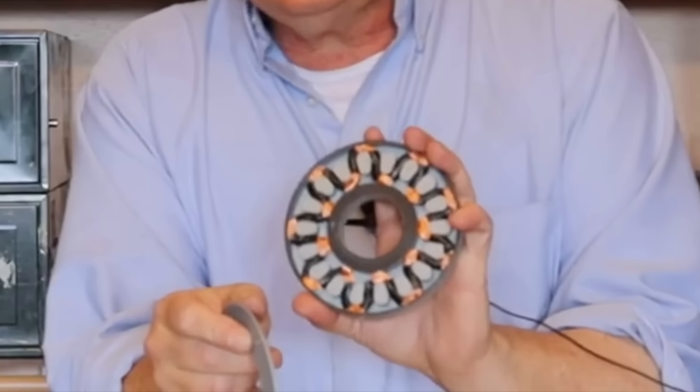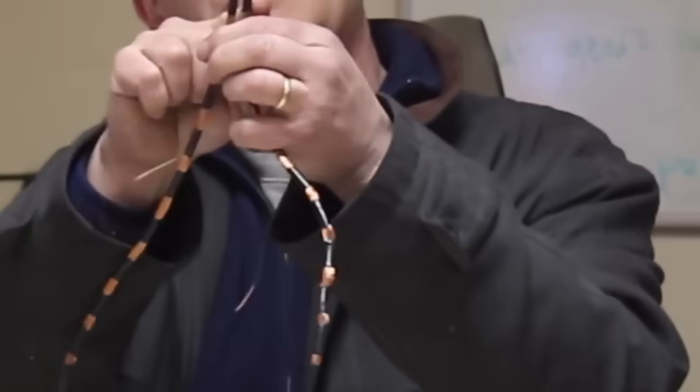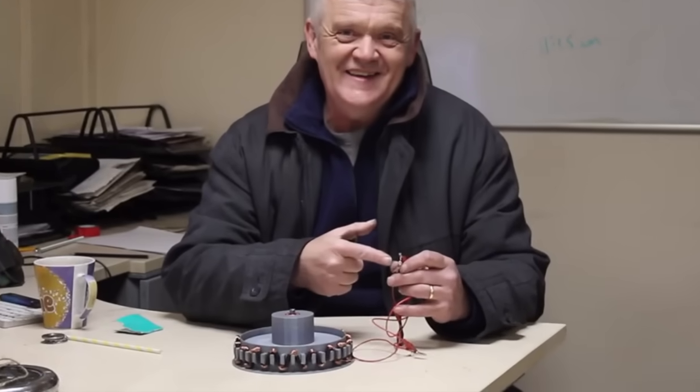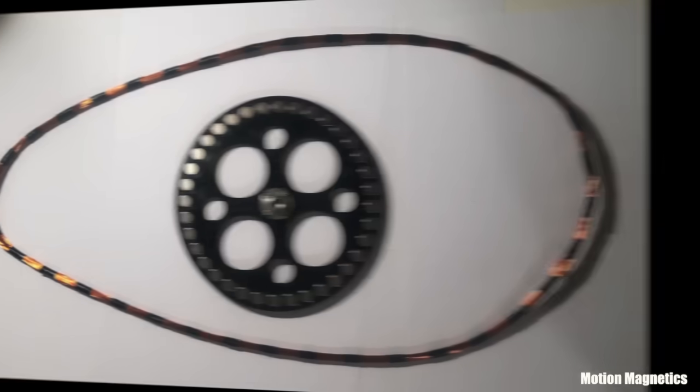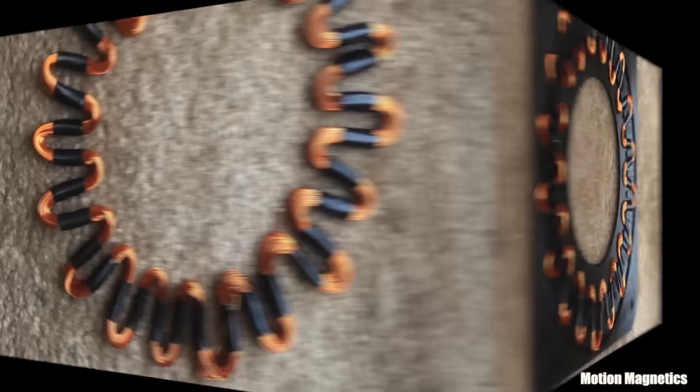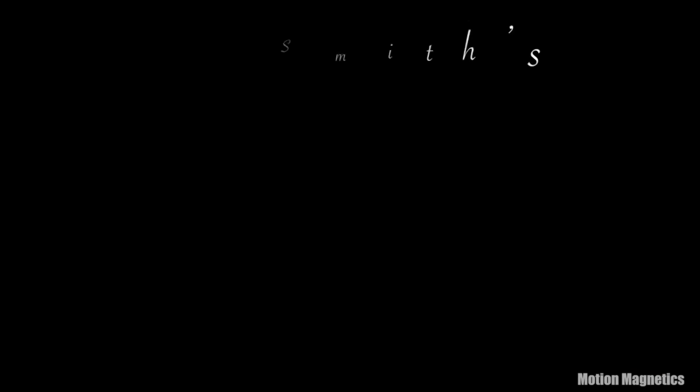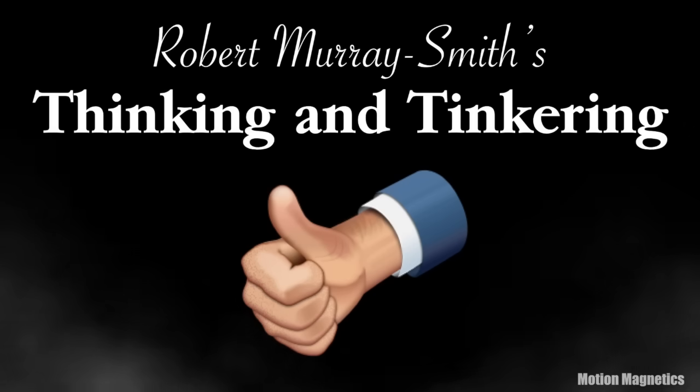I decided on a quicker and much more simplistic approach after watching one of Robert Murray Smith's videos. He's been using serpentine coils in some of his wind generator projects. Instead of individually wrapping multiple coils, you wrap one large coil and weave it in a zigzag pattern in a simple stator housing.